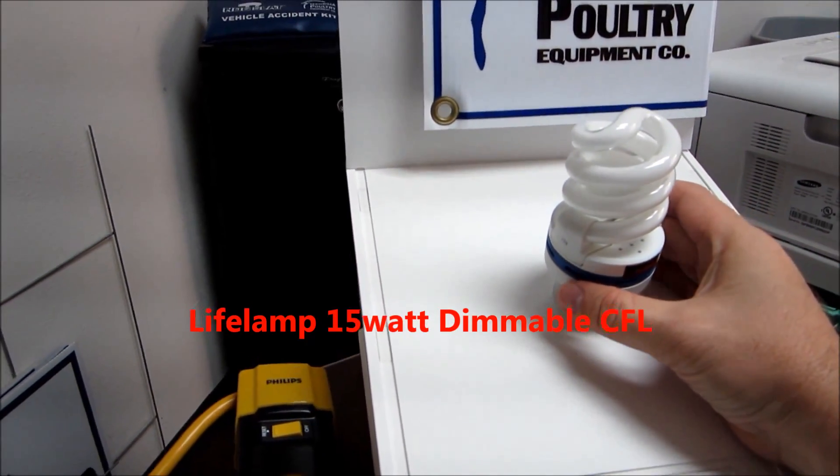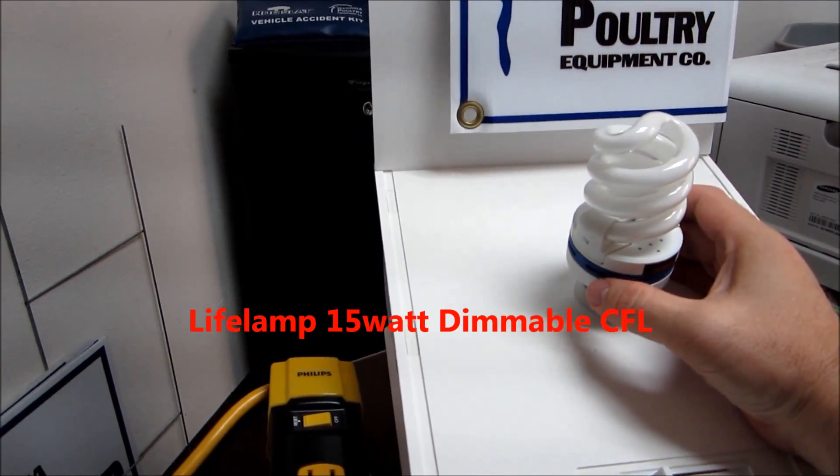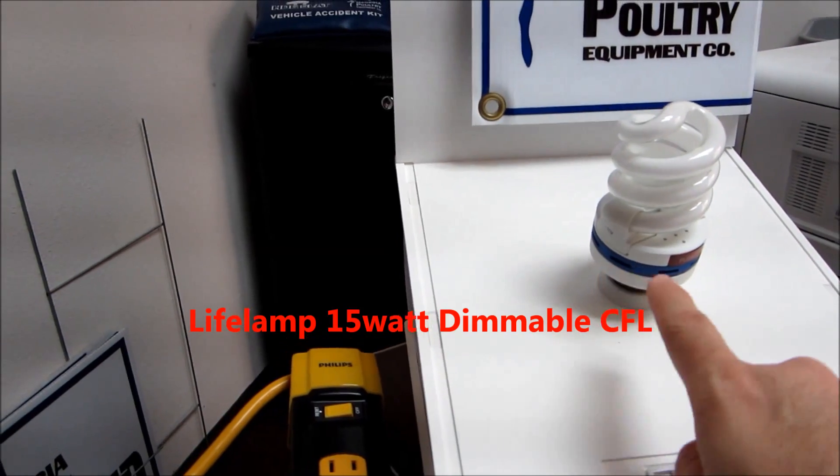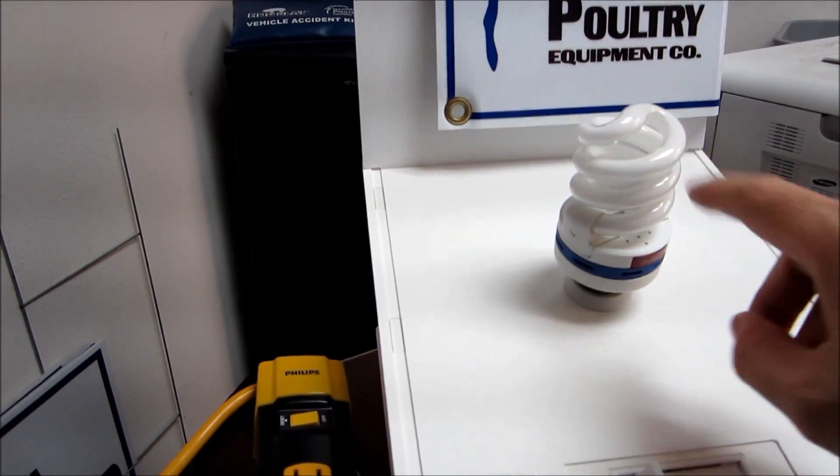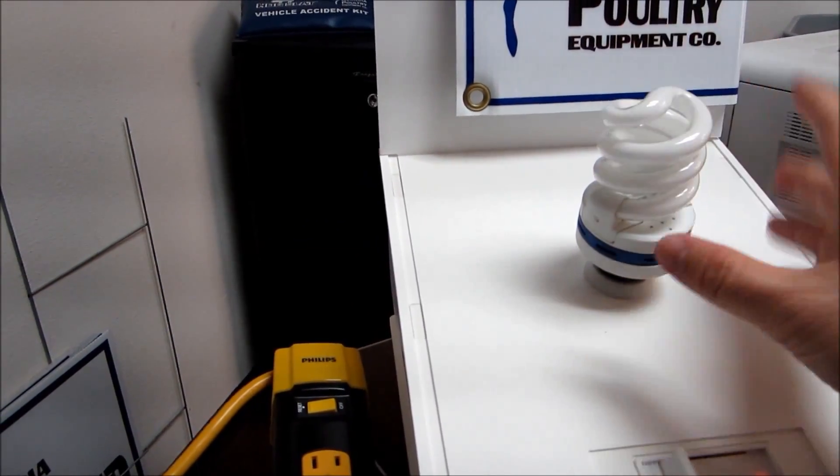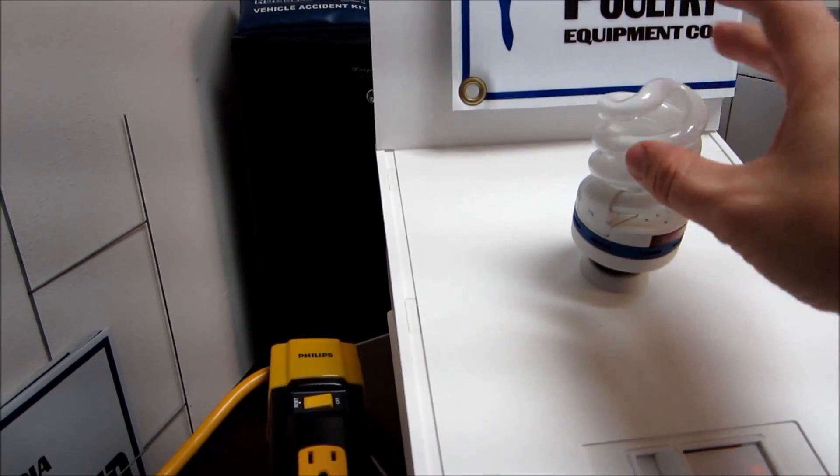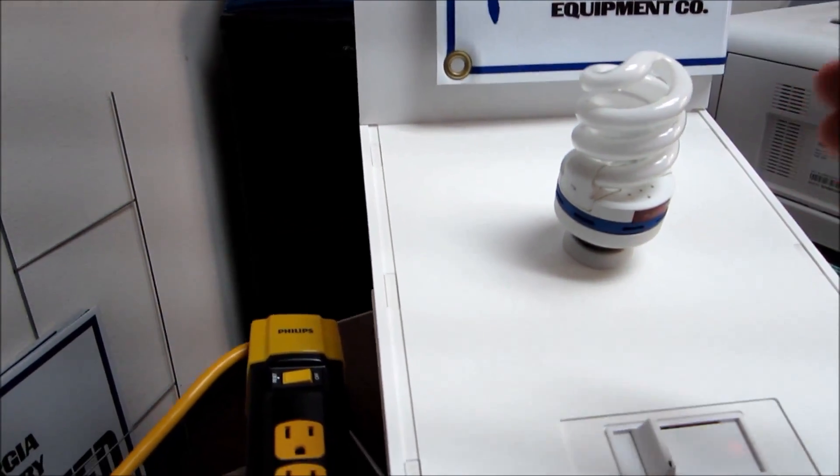Next we have what they call the life lamp dimmable fluorescent two-piece bulb. And by two-piece it means it comes with an independent ballast and an independent bulb. These can be purchased as a combo unit or replacement bulbs can be purchased if you have to replace them down the line.